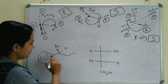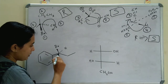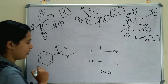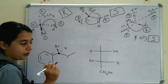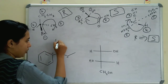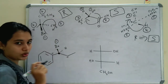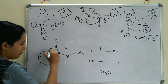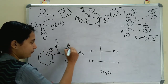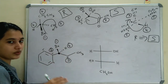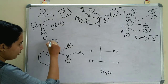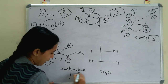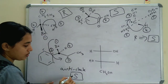Next problem: identify the chiral carbon with 4 different substituents. Bromine gets 1. Between two carbon substituents, the one attached to 2 more carbons gets 2, the other gets 3, and hydrogen gets 4. Hydrogen is at the below position, so no reversal needed. Rotating 1→2→3 gives anticlockwise rotation, so the configuration is S.